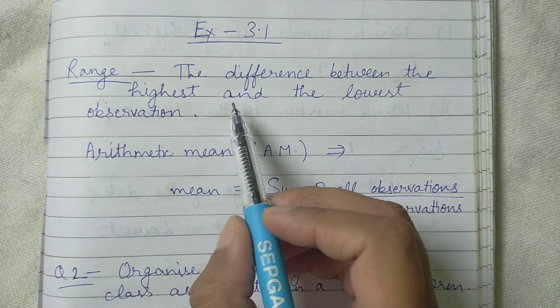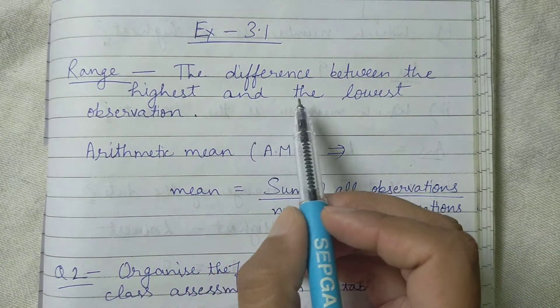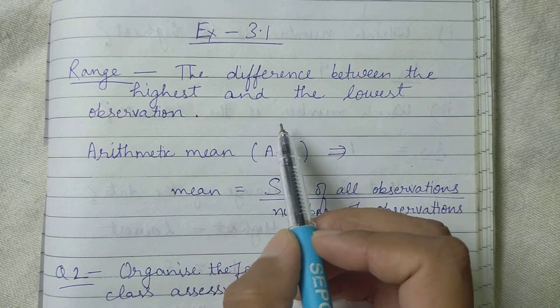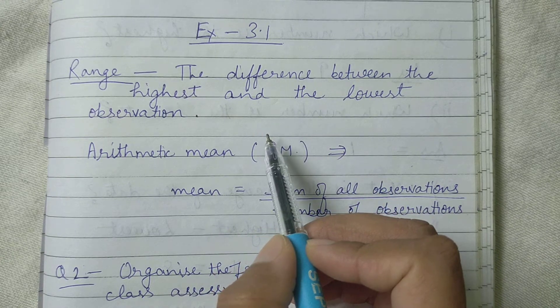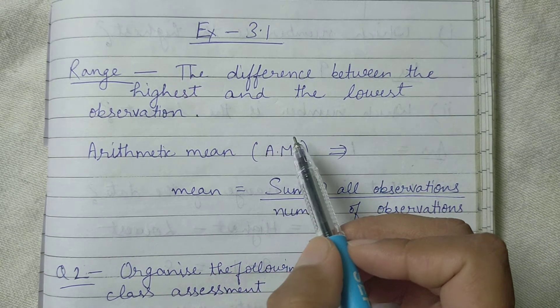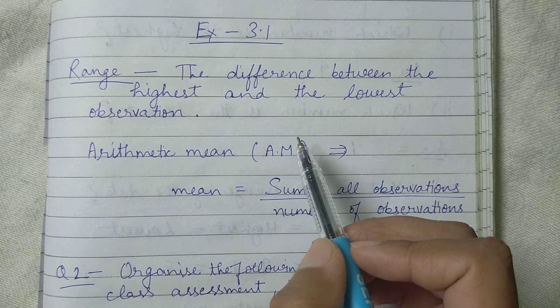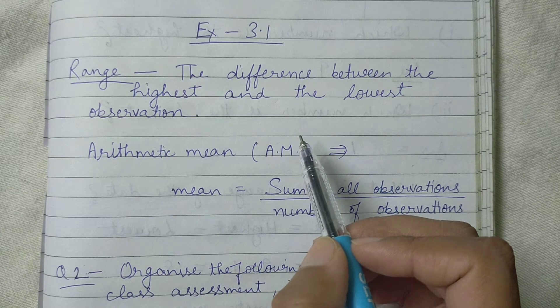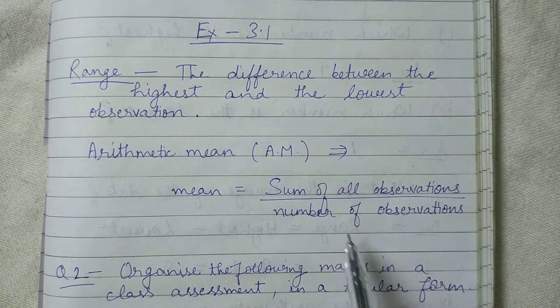Range. What is range? The difference between the highest and the lowest observation is called range. You have to check the highest and lowest observation, and the difference of highest and lowest will give you the range.